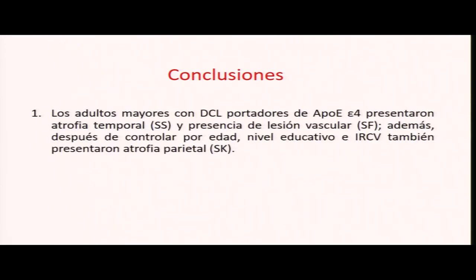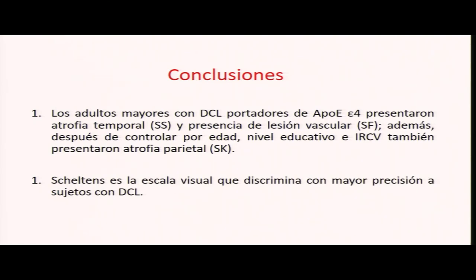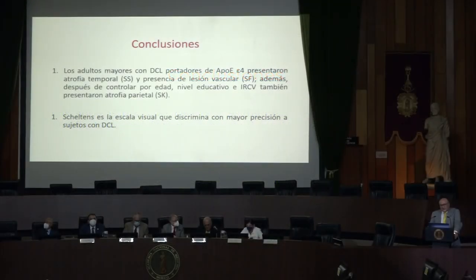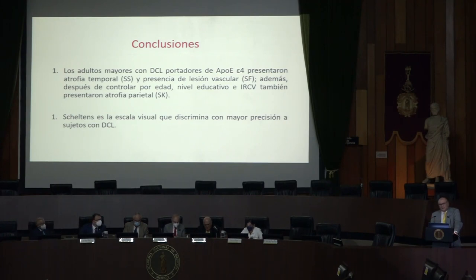Las conclusiones son que los adultos mayores con deterioro cognitivo leve portadores de APOE Epsilon 4 presentaron atrofia temporal, mayor presencia de lesiones vasculares, y que después de controlar por otras variables como edad, nivel educativo y factores de riesgo, esta asociación se mantuvo. Tal vez la escala de Scheltens sea la escala visual que mejor discrimina la presencia de alteraciones estructurales con deterioro cognitivo leve.